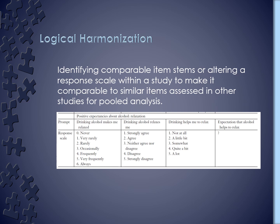Another example of logical harmonization is one where it may just not be possible. In this case, we're looking at positive expectancies about alcohol — a relaxation subscale. Even though the item stems look fairly comparable across three studies — 'drinking alcohol makes me relax,' 'drinking alcohol relaxes me,' and 'drinking helps me to relax' — the response scales are very different. You have a frequency response scale and an attitudinal response scale, and putting them together is really unclear. Can you say that 'never' is the equivalent of 'strongly disagree'? It's very hard to do that. Later analysis of the scale suggested we really couldn't harmonize this item, so in some cases we may not be able to engage in logical harmonization.